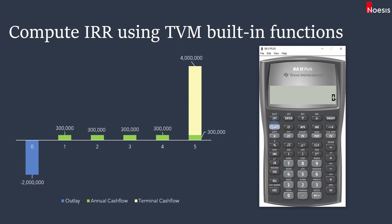Make sure that you are using END mode, or the ordinary annuity mode. To check, press Second and PMT and make sure it is set to END, not BGN. If it is set to BGN, you will see BGN at the top right-hand corner of the calculator screen. Change it back to END and exit the screen.